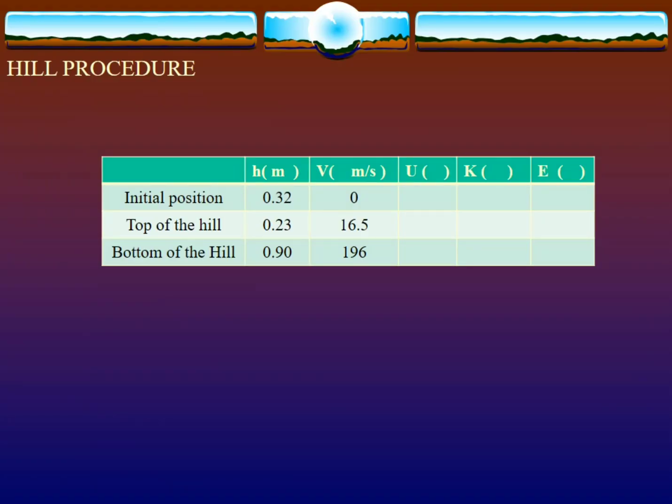Instructions over. Now this is the table for the hill procedure. You are given the initial position, top of hill, and bottom of hill. The initial position at the edge is 0.32 meters, top of hill is 0.23 meters, and bottom of hill is 0.90 meters. Also the corresponding velocity regarding the initial position and top of hill is 16.5, and the bottom of hill is 196. You must calculate and fill in this blank.